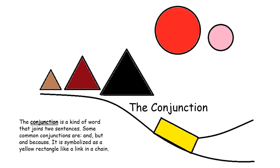The conjunction is a kind of word that joins two sentences. Some common conjunctions are and, but, and because. It is symbolized as a yellow rectangle, like a link in a chain.